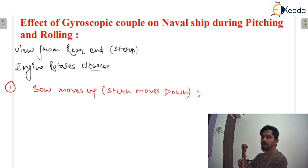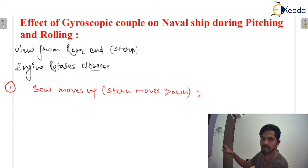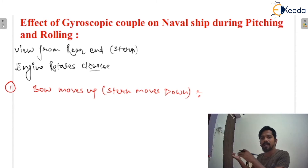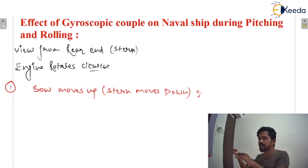Now, we are given that bow moves up. So if I rotate this ship on the left side, there will be an active gyroscopic couple, and the reactive gyroscopic couple would be in the opposite direction. We consider the reactive gyroscopic couple as the effect. Effect means the ship will try to turn towards the right side, because the reactive gyroscopic couple is working on the right side.